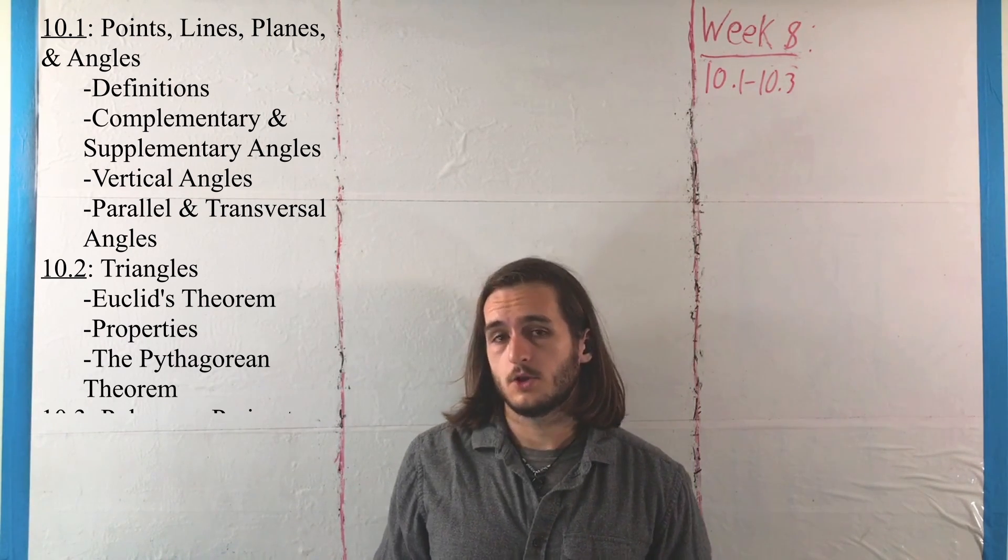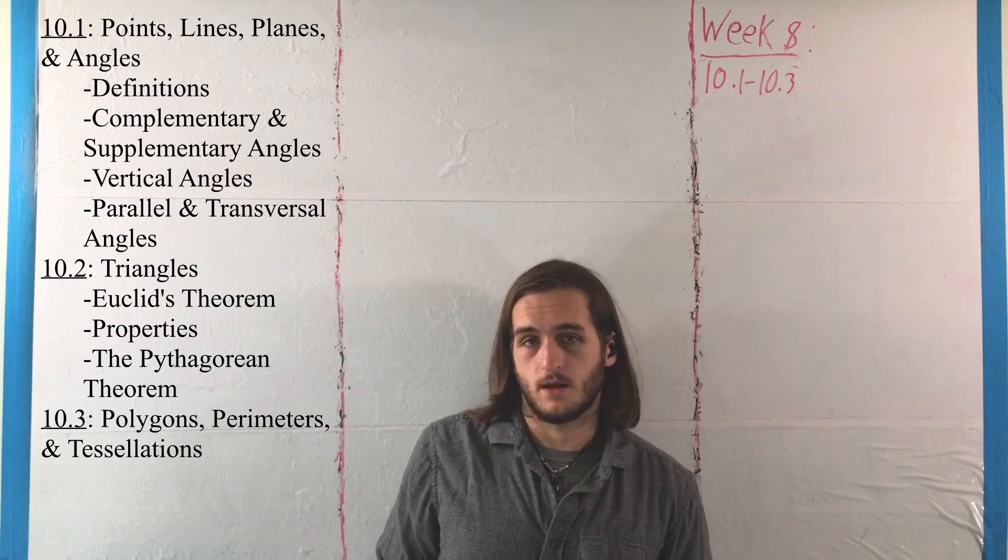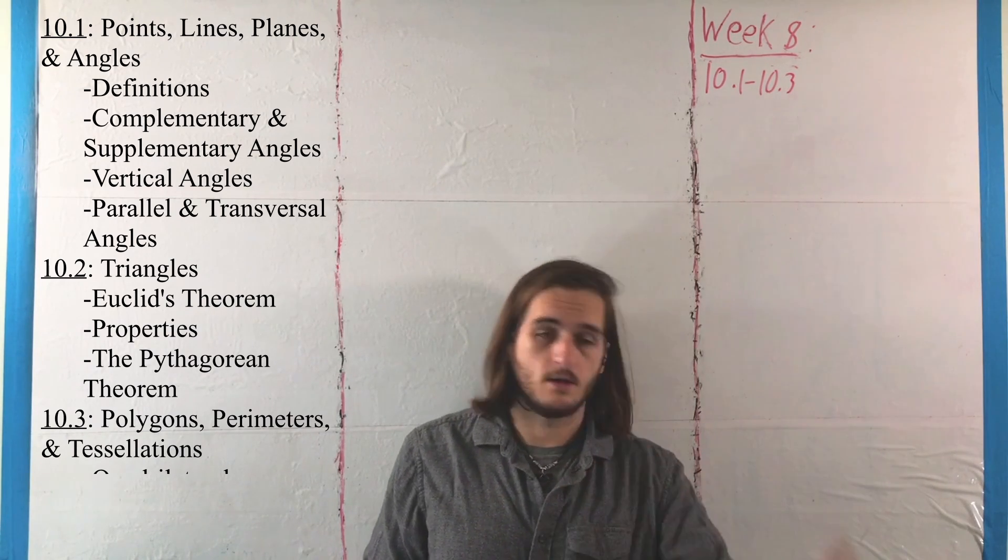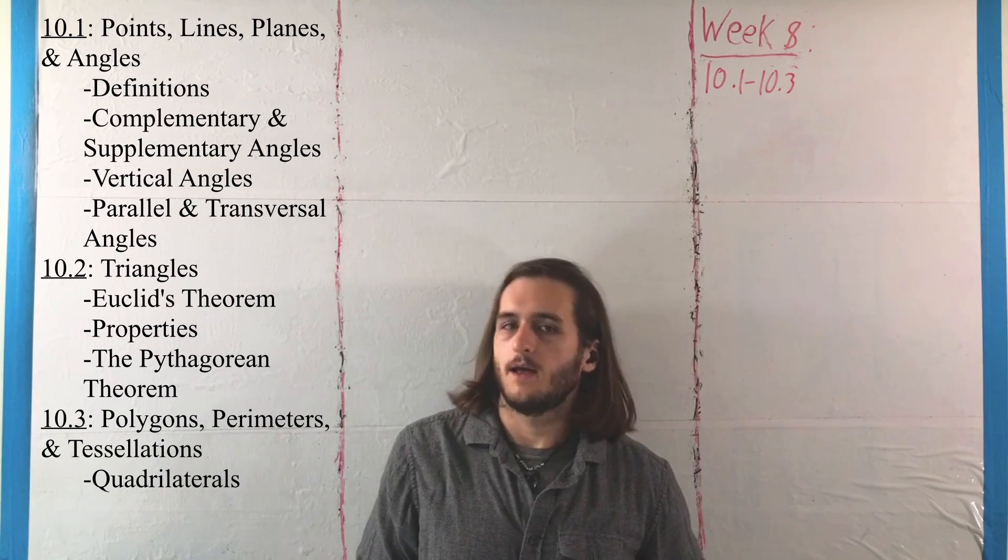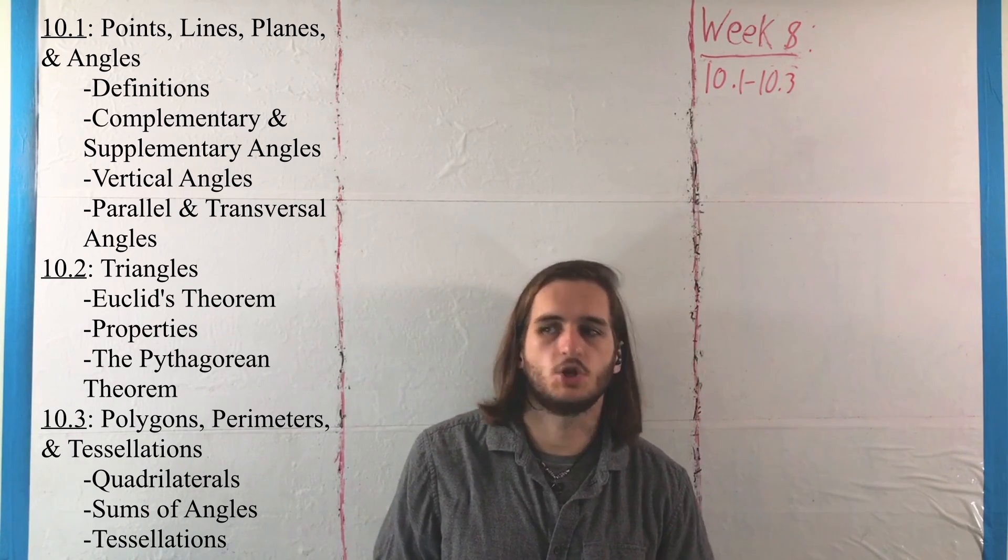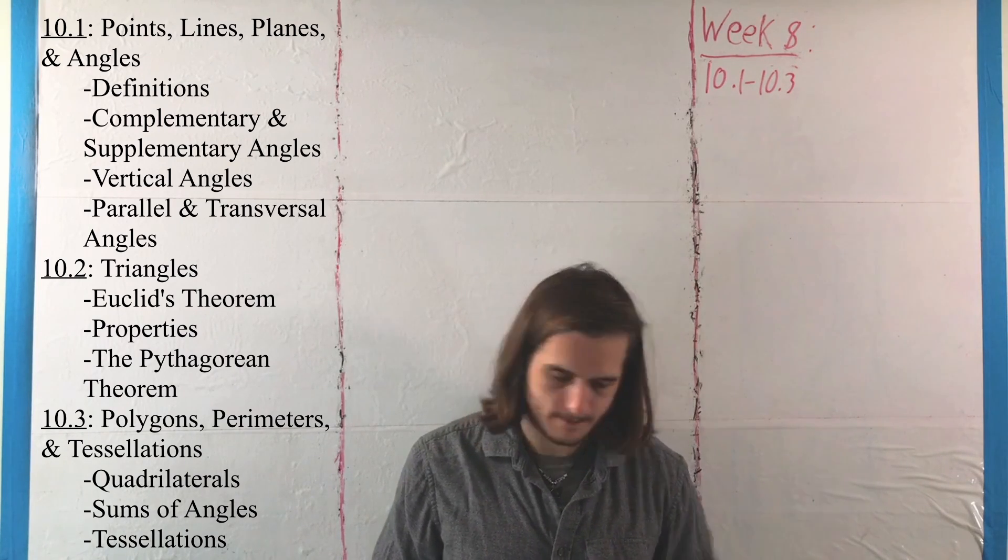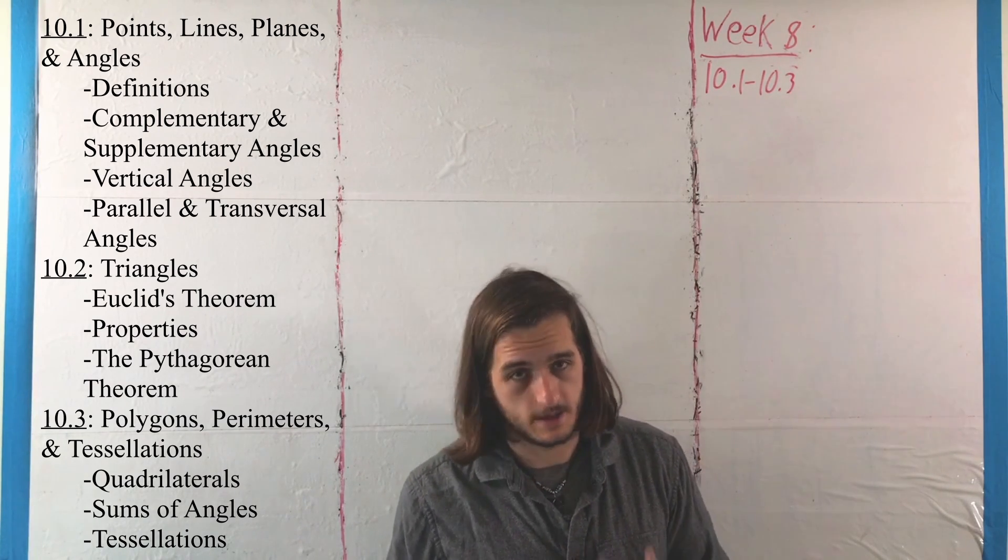And then in 10.3, we're going to be looking at work with more general polygons. We're going to look at quadrilaterals and then other shapes, as well as the angles we can have within a polygon, and then a special structure called a tessellation, which is basically just a puzzle with fixed repeated patterns. We'll see that at the end of the section.